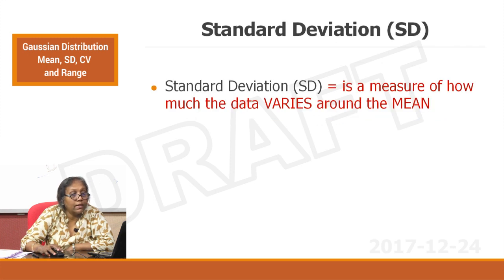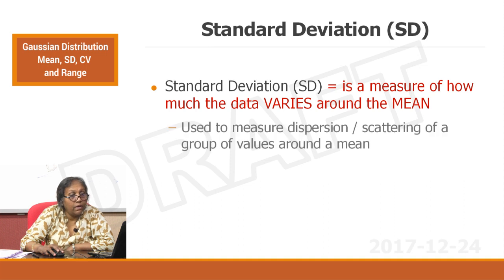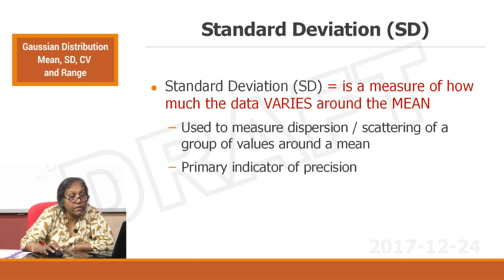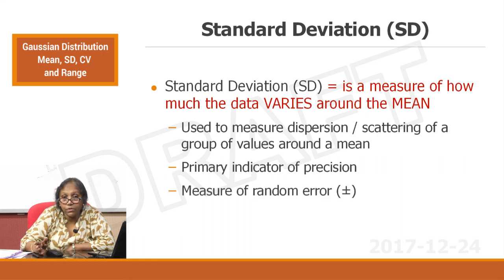Standard deviation is the measure of how much the data varies around the mean. It is used to measure the dispersion or scattering of a group of values around the mean. It is a primary indicator of precision, a measure of random error, and it can be either positive or negative — it has positive and negative directions.